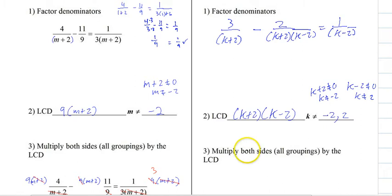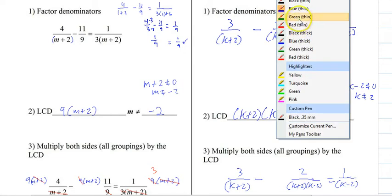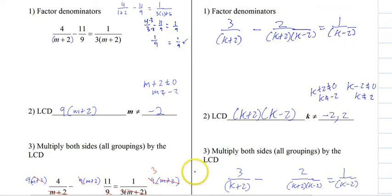All right. So now the next thing. So now we're going to multiply everything. So we're going to rewrite the problem and leave some spaces.